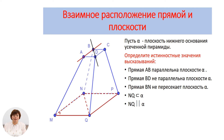Прямая НКЮ содержится в плоскости α. Прямая НКЮ параллельна плоскости α. Вы про себя уже решили, какие из высказываний истинны, какие ложны. Поэтому проверьте себя.